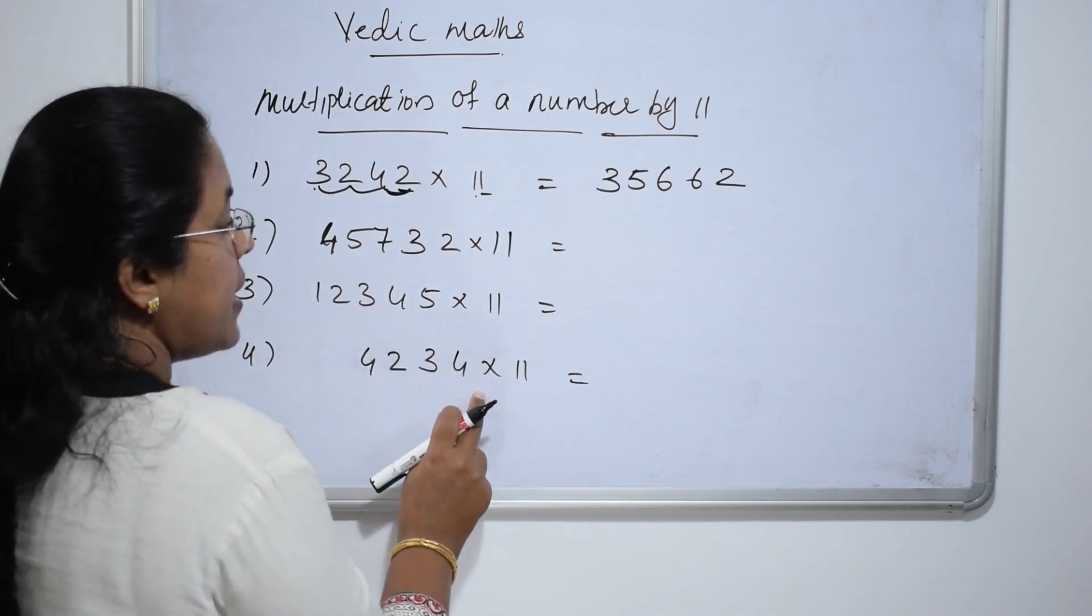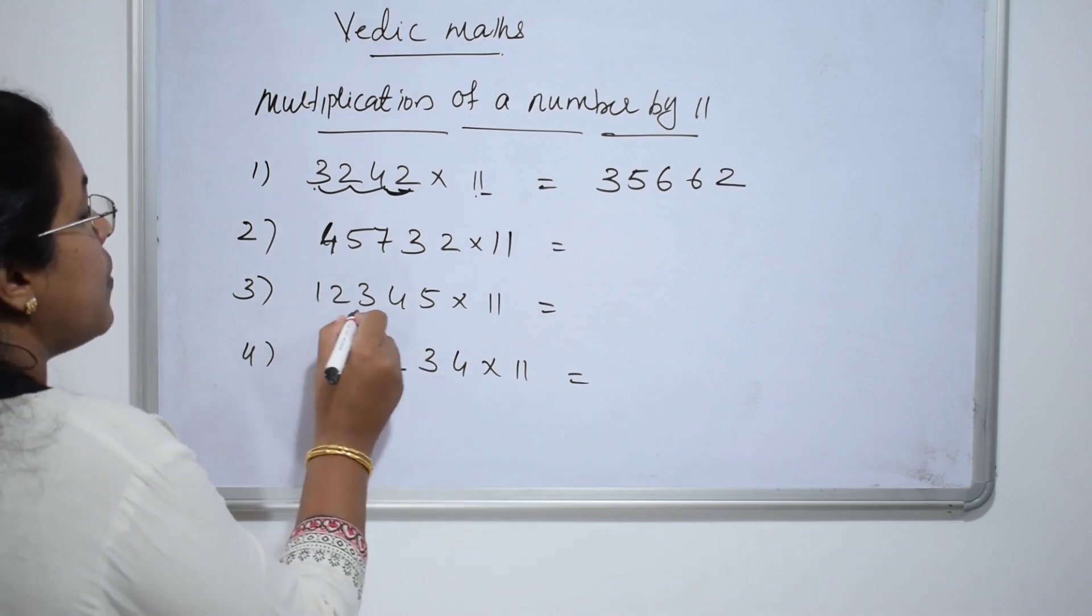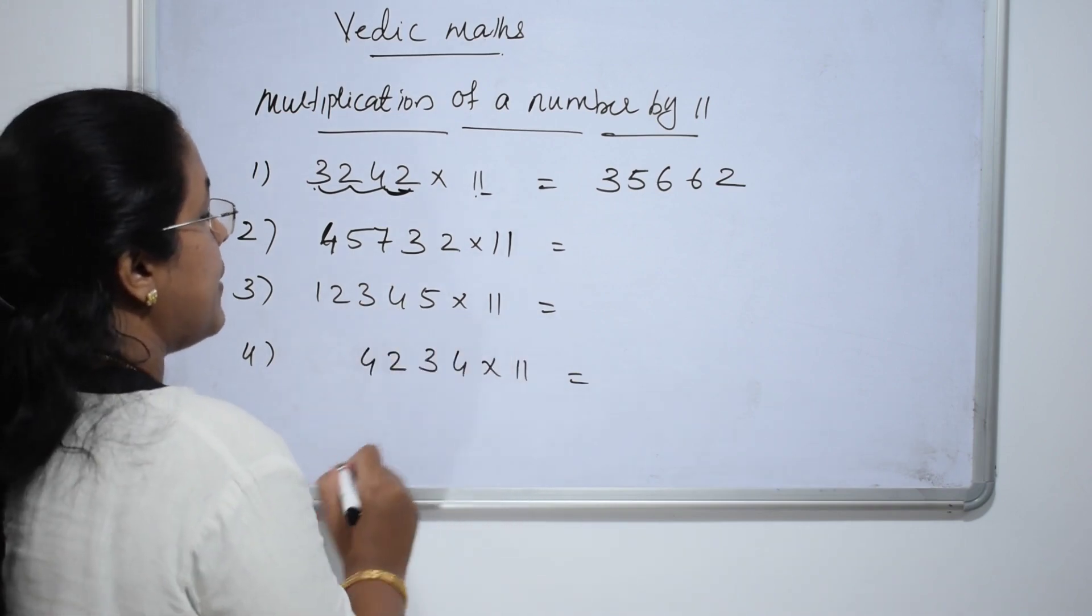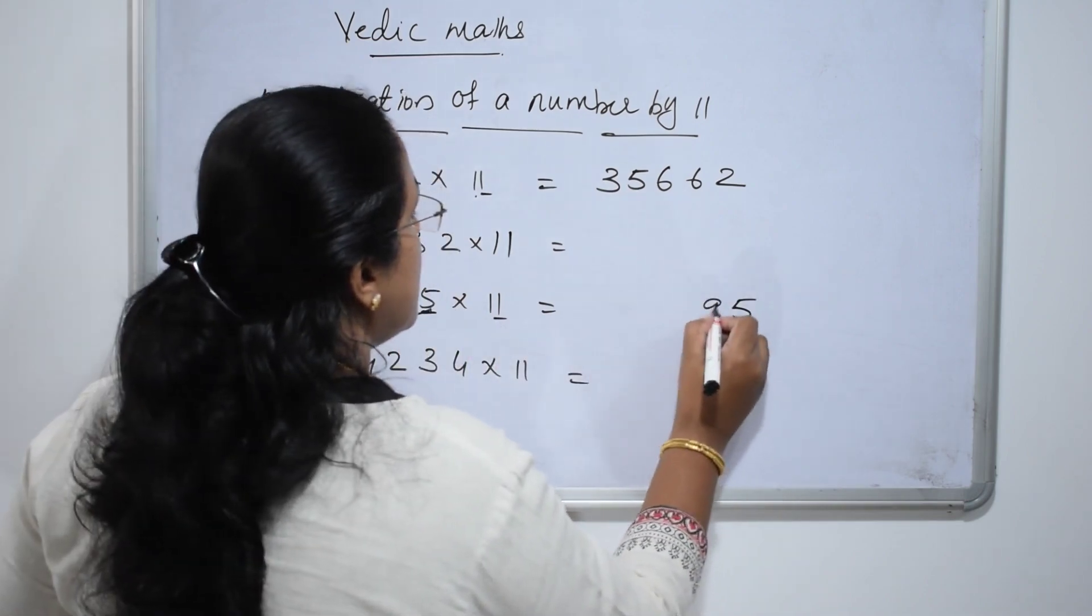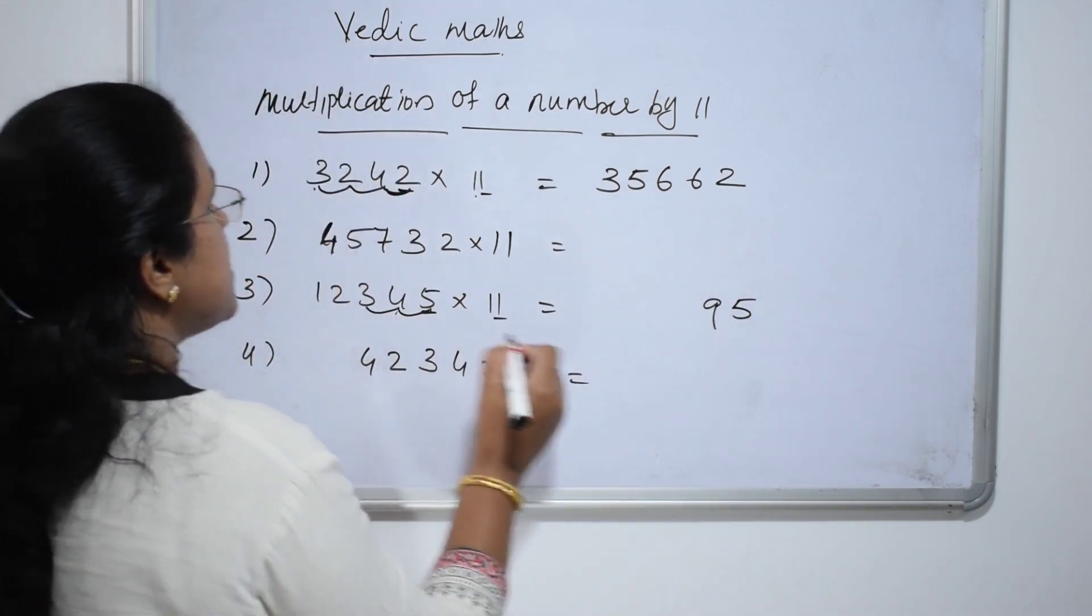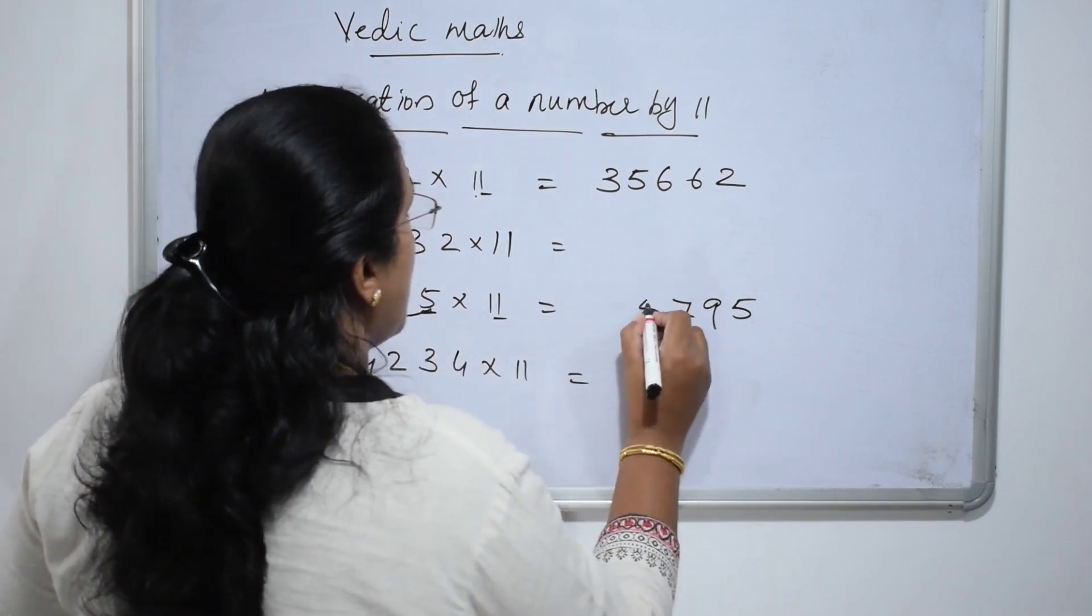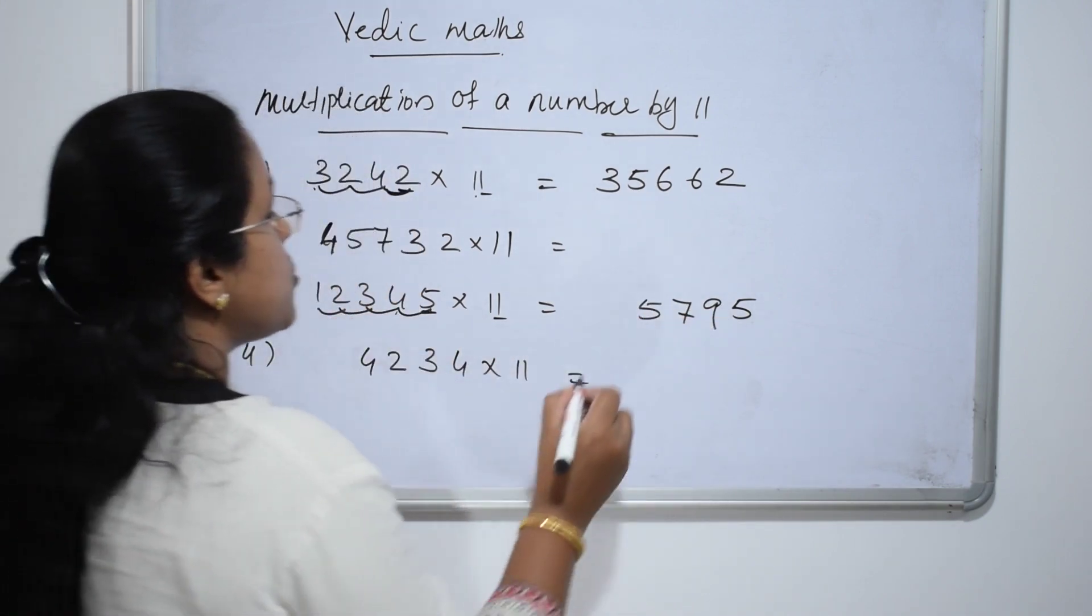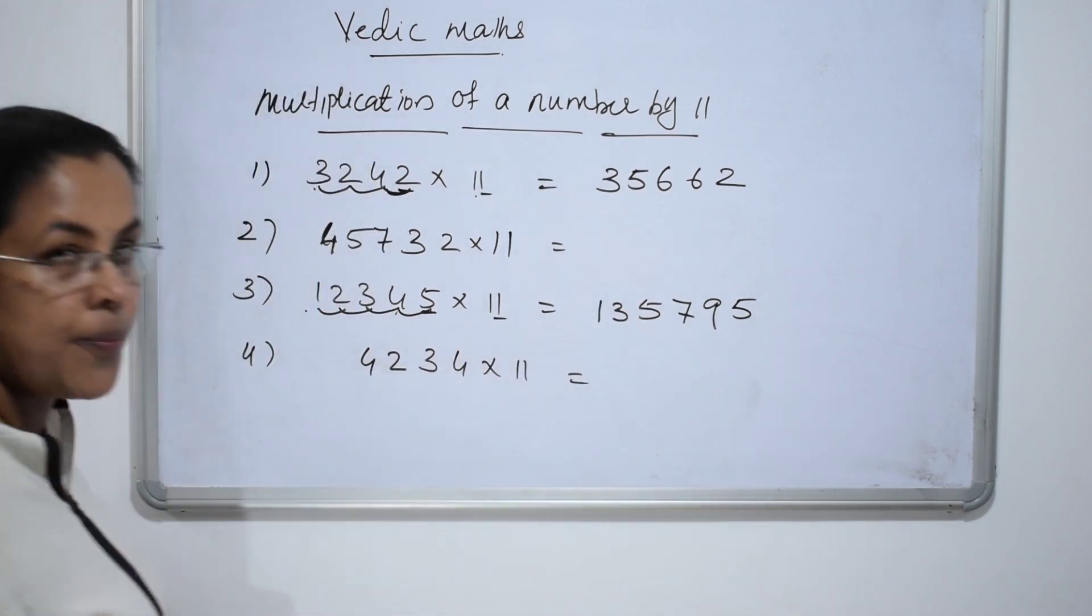We will do this and this first. Then we will come back to this. 12345 into 11. 5 times 1 is 5. 5 plus 4, 9. 4 plus 3, 7. 3 plus 2, 5. 1 plus 2, 3. 1 into 1, 1.